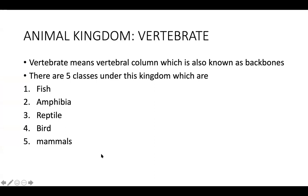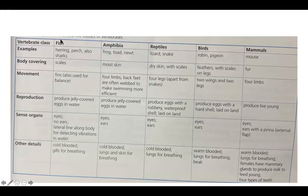The next example of the animal kingdom is vertebrate. Vertebrate means vertebral column, also known as a backbone. Vertebrates are organisms with a backbone, while invertebrates have no backbone. Under vertebrate, there are five classes: fish, amphibia, reptile, birds, and mammal.